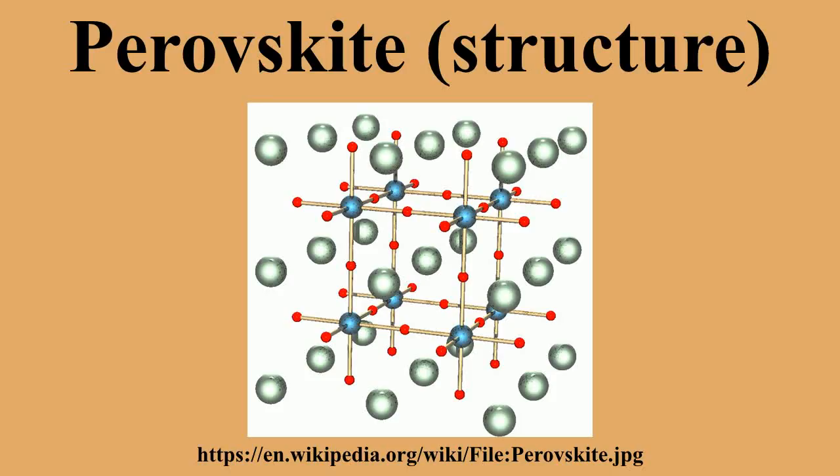This phase has the orthorhombically distorted perovskite structure, stable at pressures from approximately 24 gigapascals to approximately 110 gigapascals. However, it cannot be transported from depths of several hundred km to the earth's surface without transforming back into less dense materials. At higher pressures, magnesium metasilicate perovskite transforms to post-perovskite.